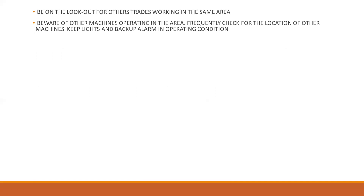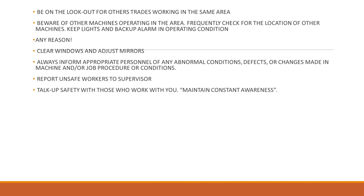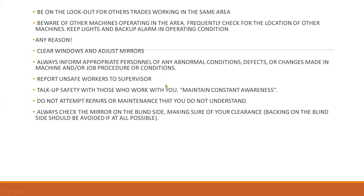Keep lights and backup alarm in operating condition. Clear windows and adjust mirrors. Always inform appropriate personnel of any abnormal conditions, defects, or changes made in the machine and/or job procedure or conditions. Report unsafe workers to your supervisor. Talk up safety with those who work with you and maintain constant awareness. Do not attempt repairs or maintenance you do not understand. Always check the mirror on the blind side — backing on the blind side should be avoided if at all possible.